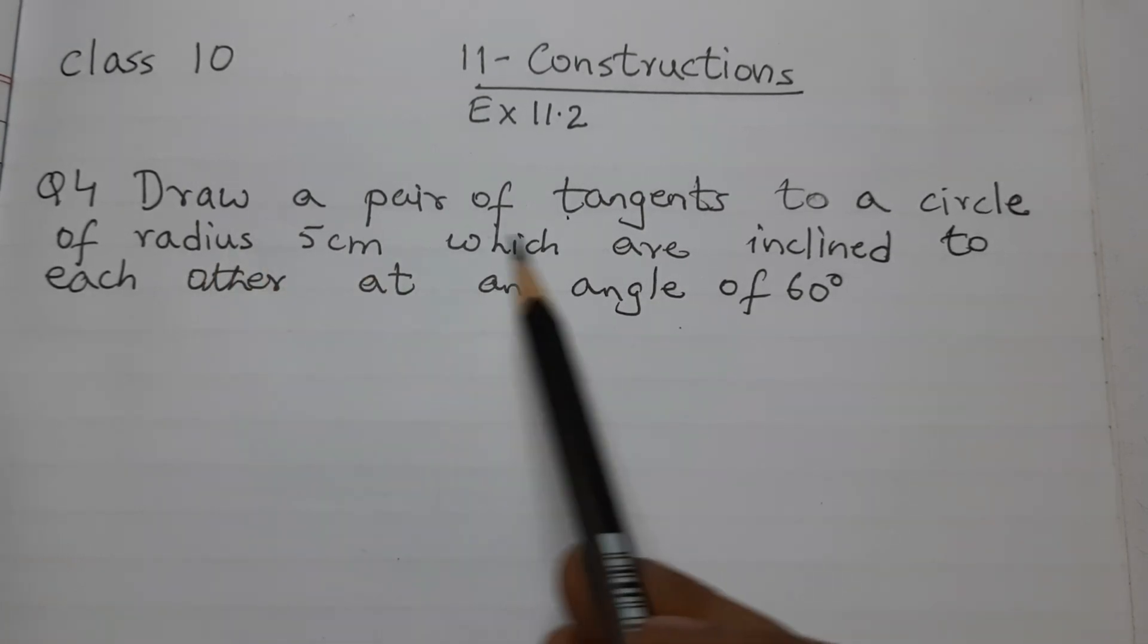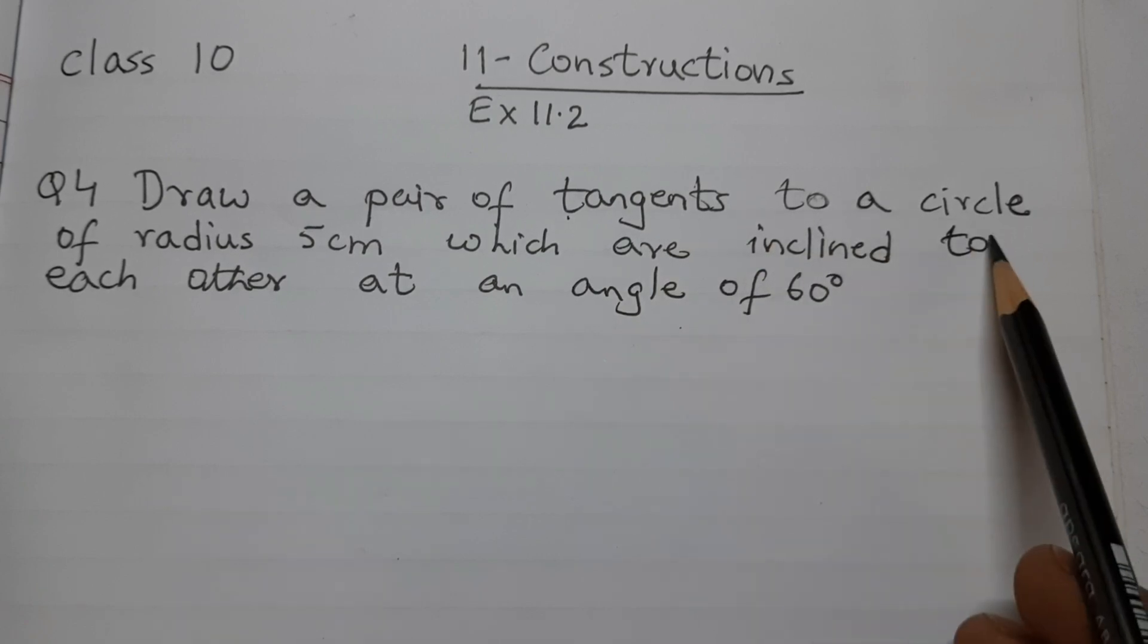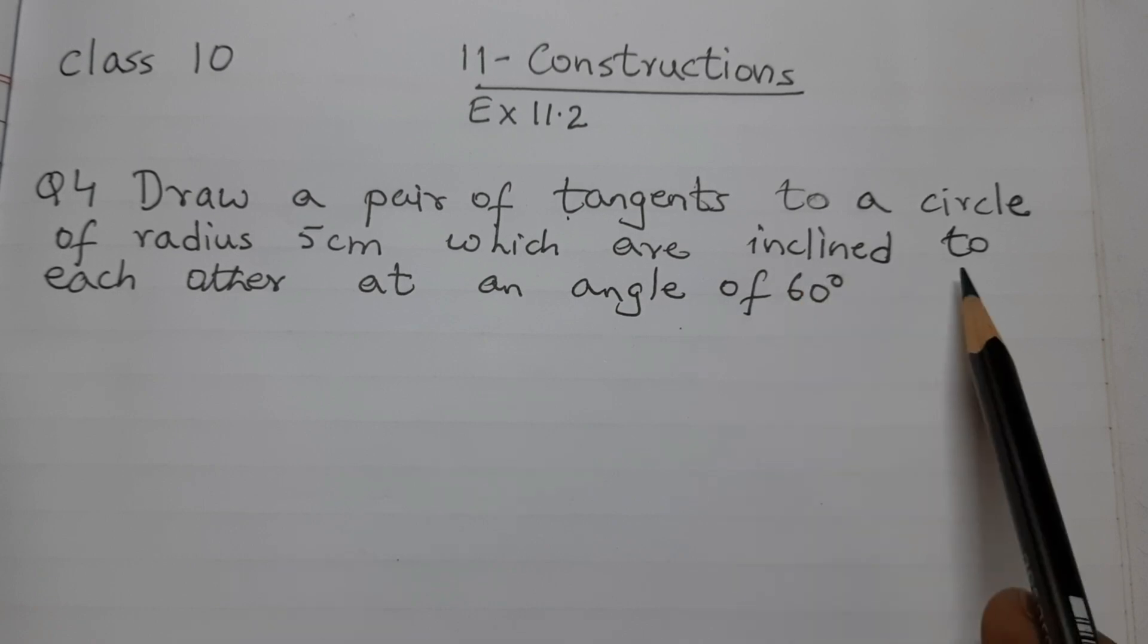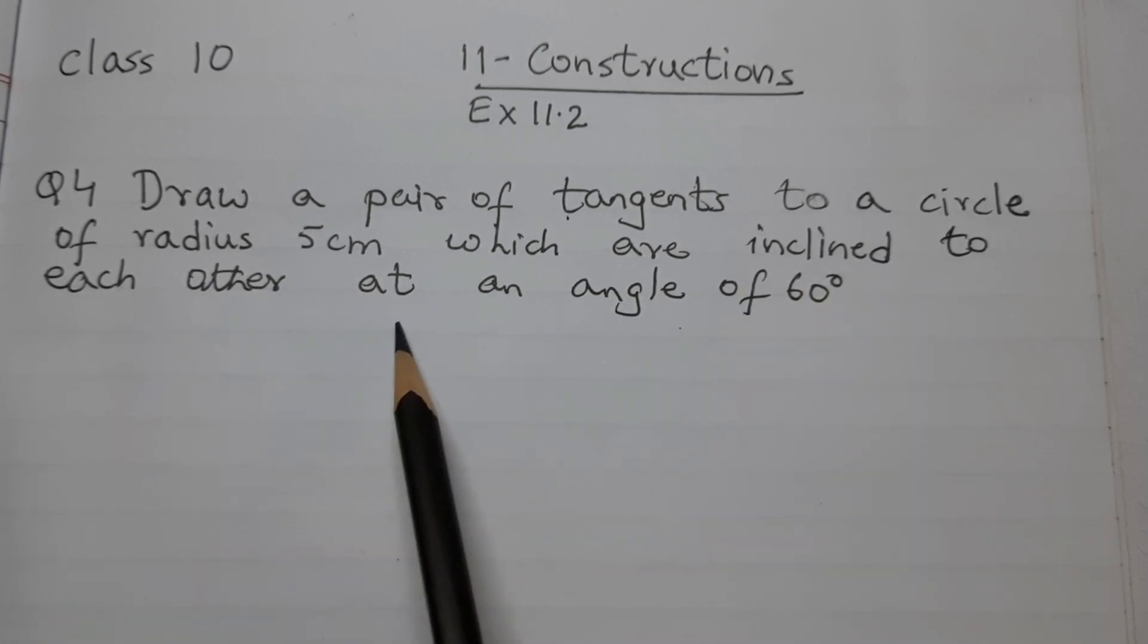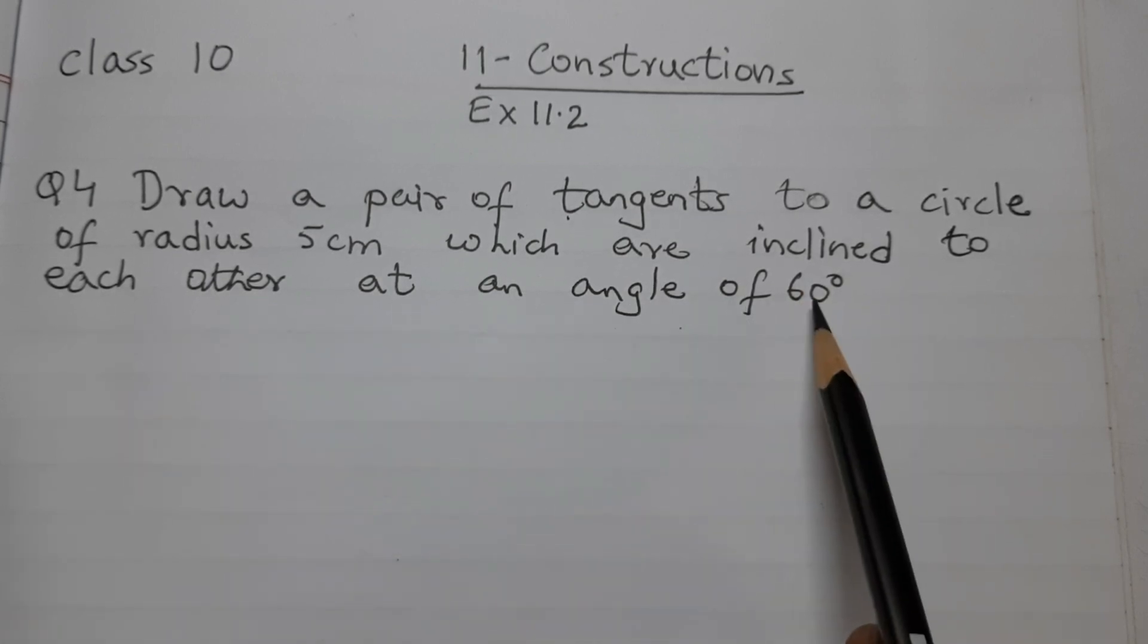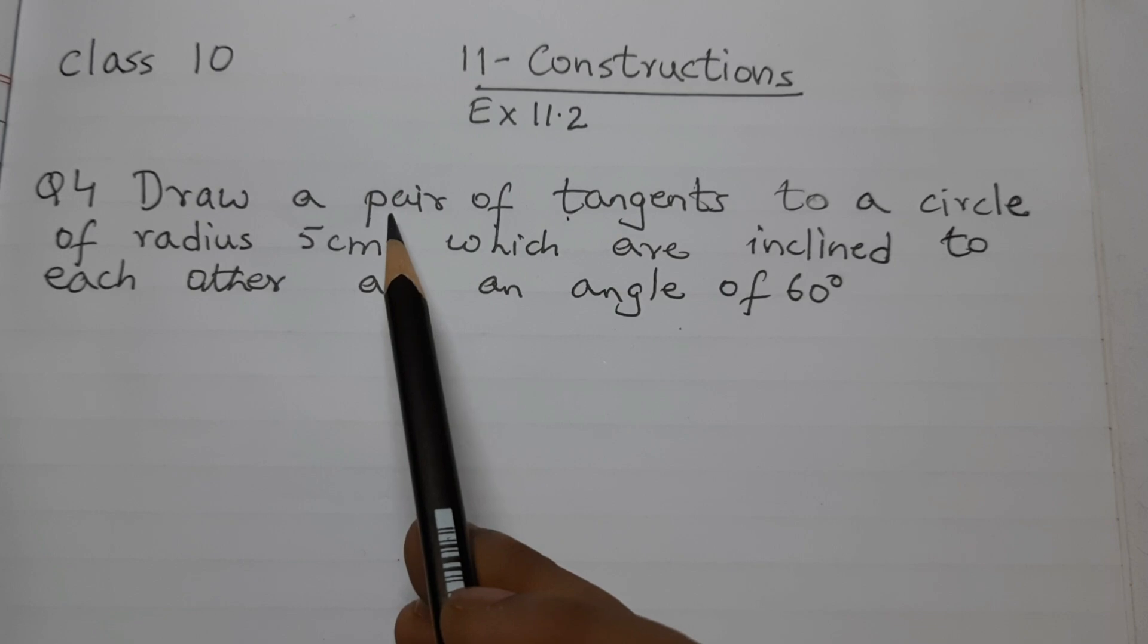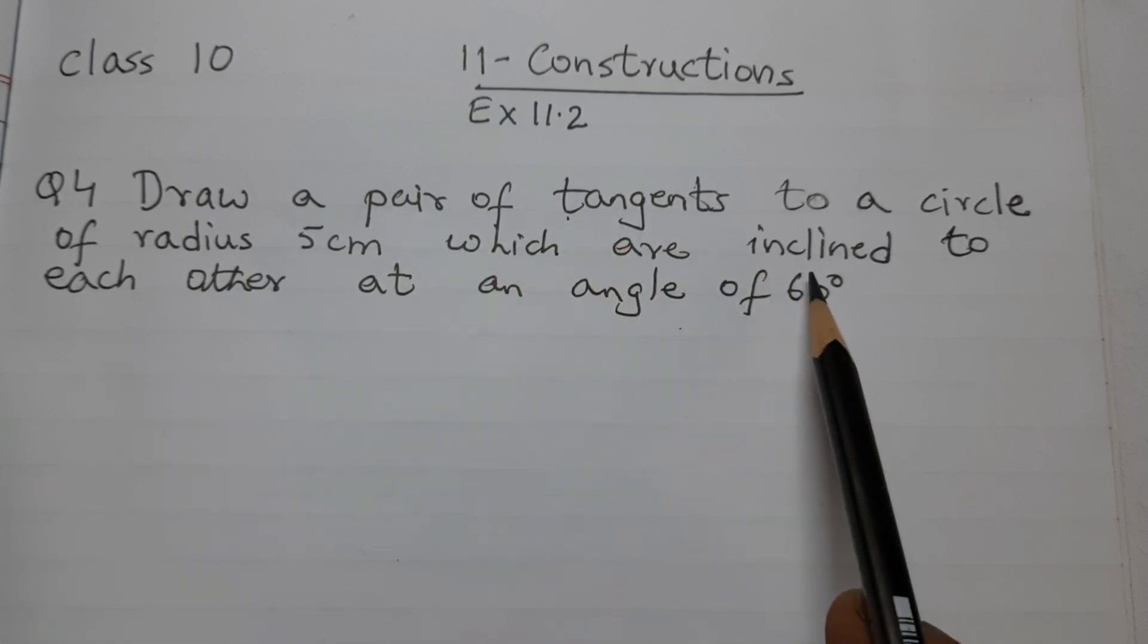Draw a pair of tangents to a circle of radius 5 cm which are inclined to each other at an angle of 60 degrees. So we need to draw a circle of radius 5 cm and then a pair of tangents which are making an angle of 60 degrees with each other.